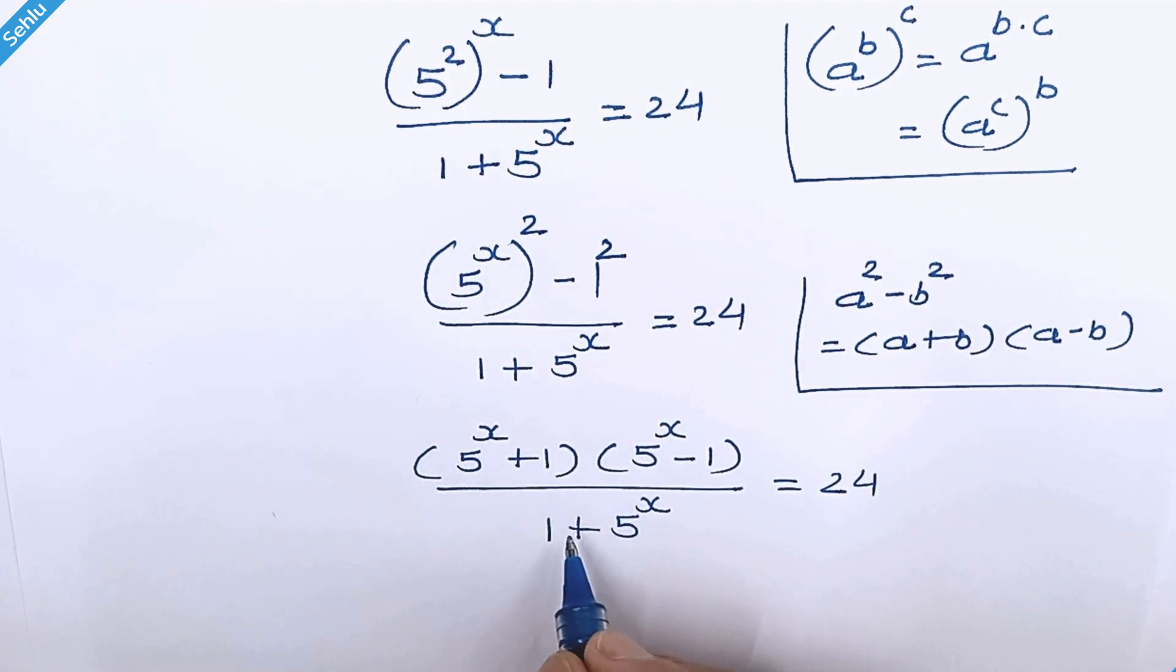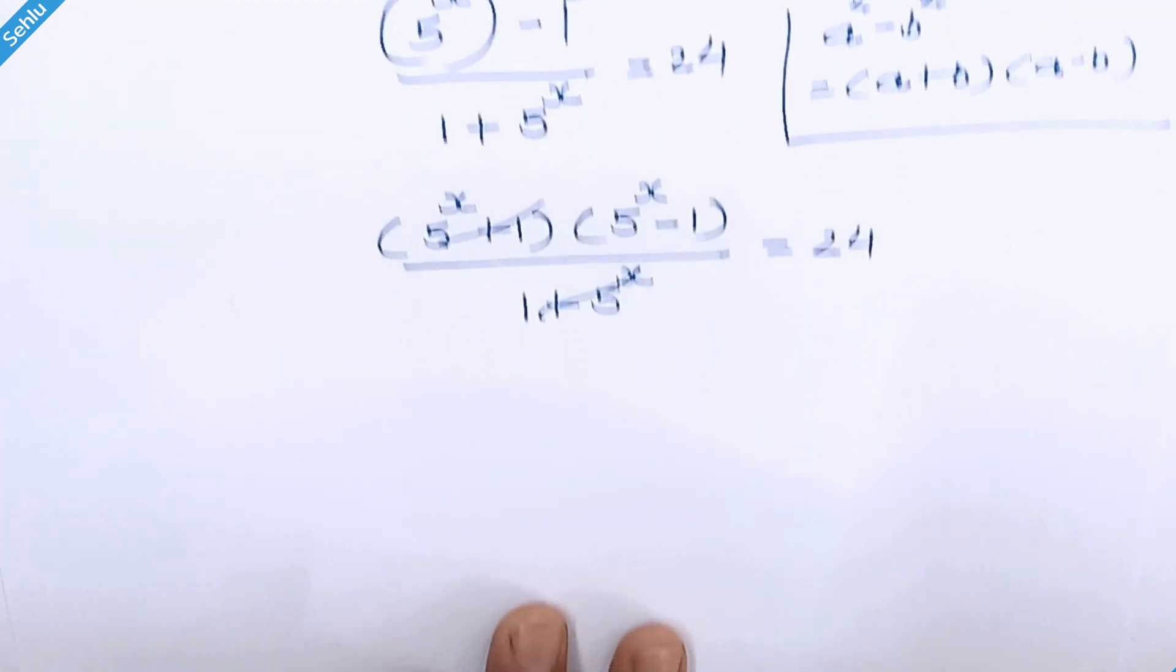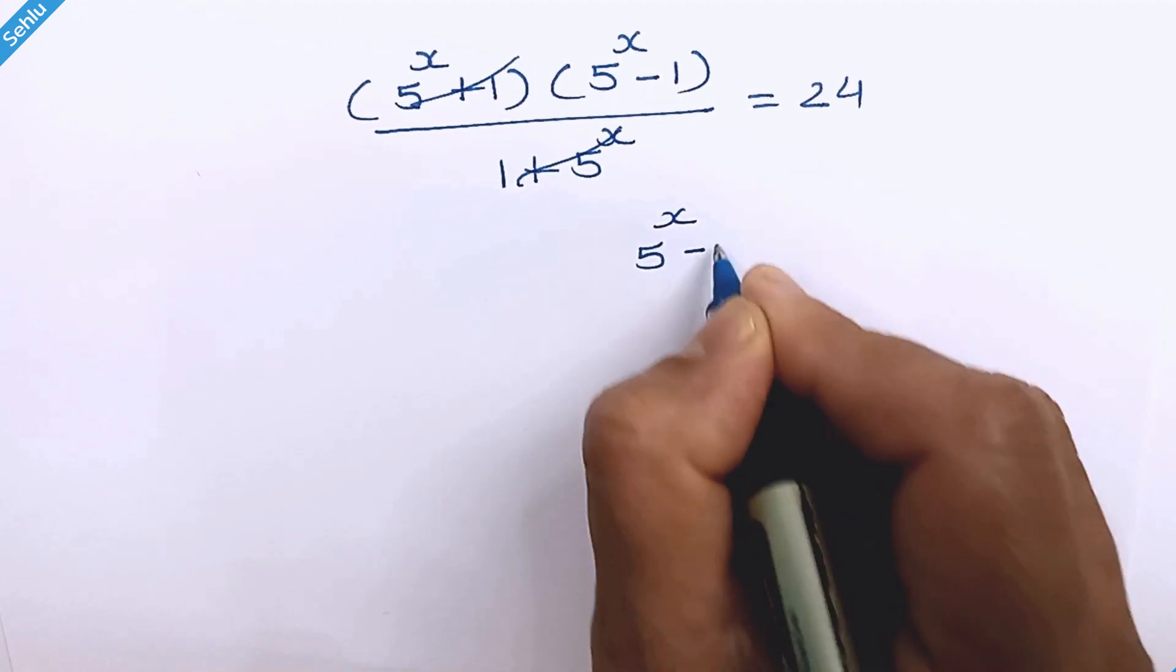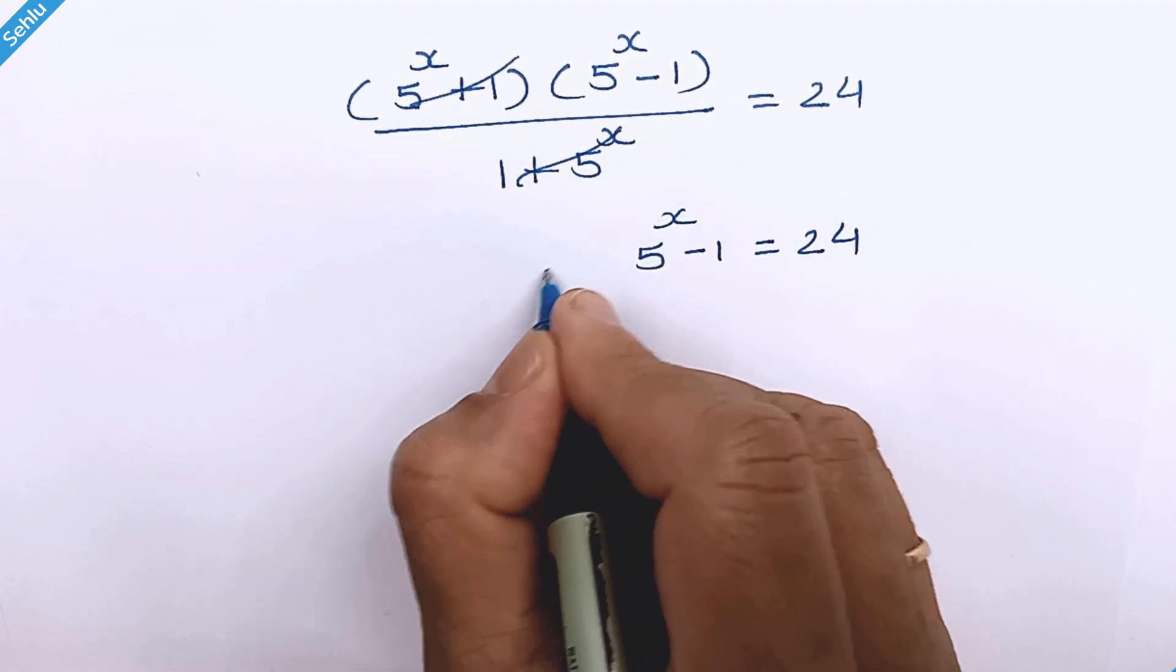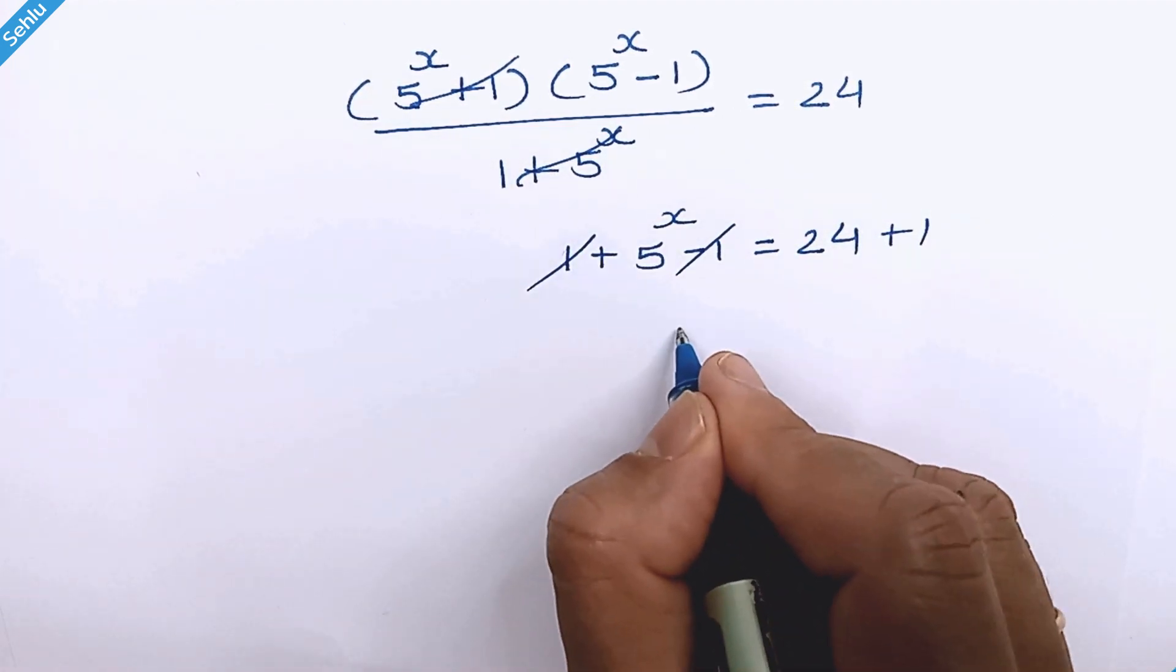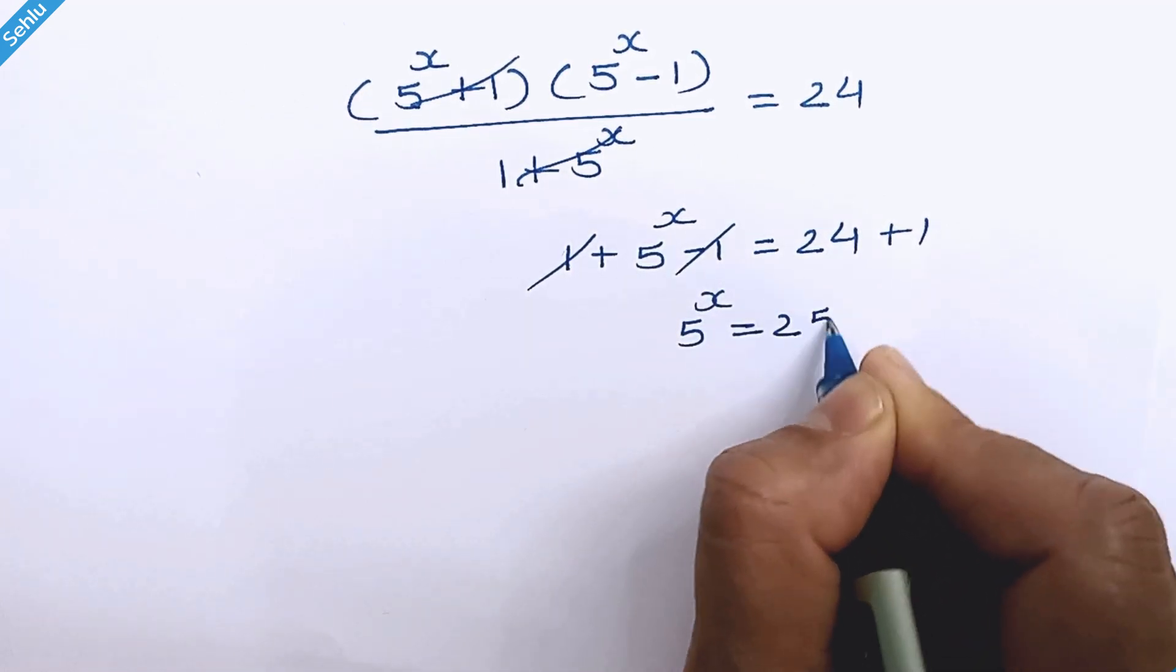Now these two are same and they will cancel to each other. So we have 5 raised to x minus 1 is equal to 24. Let's add 1 both the sides. These two get cancelled out. Now we have 5 raised to x is equal to 25.